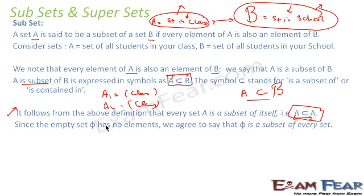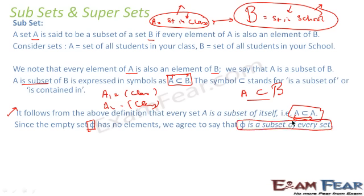There is one more rule: if a set does not have any element, then that set is a subset of every set. For example, if there is a class 15 with zero students, it would still be a subset of your school. So phi (the empty set) is a subset of every set, and A is a subset of A for any set.